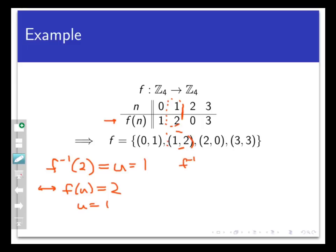Likewise, f inverse of 0 equals 2 because f of 2 equals 0. f inverse of 1 equals 0 because f of 0 equals 1. And f inverse of 3 equals 3 because f of 3 equals 3.